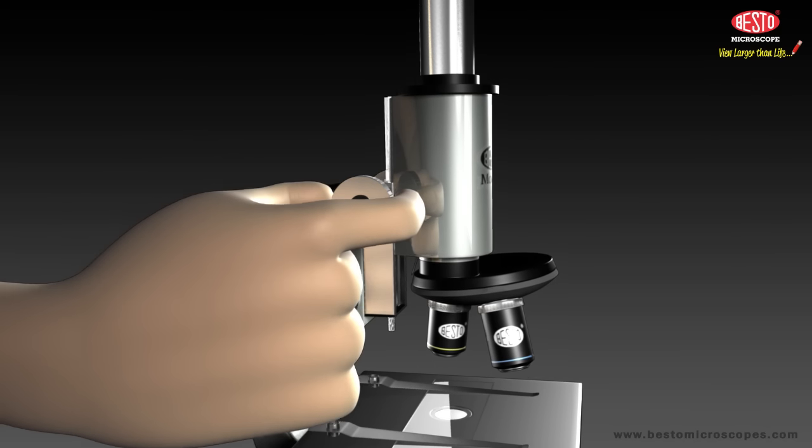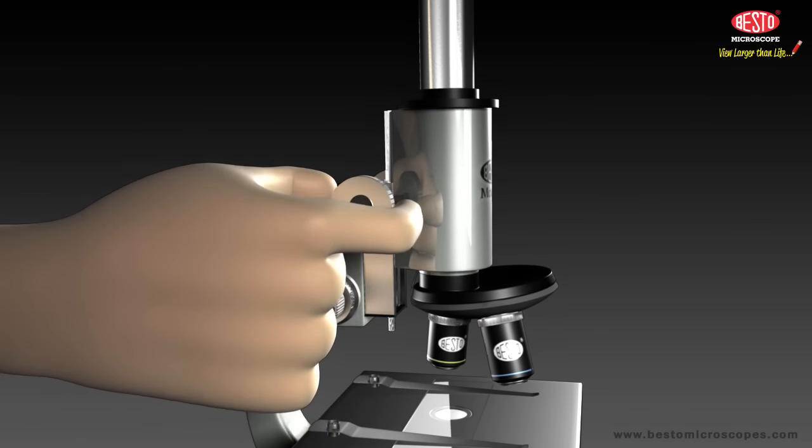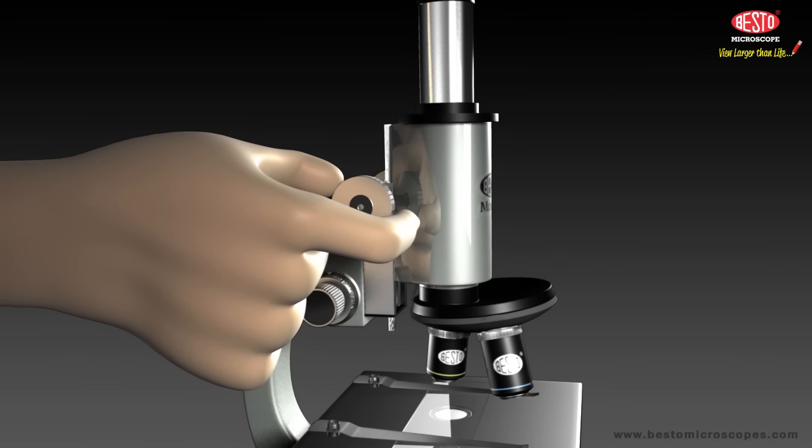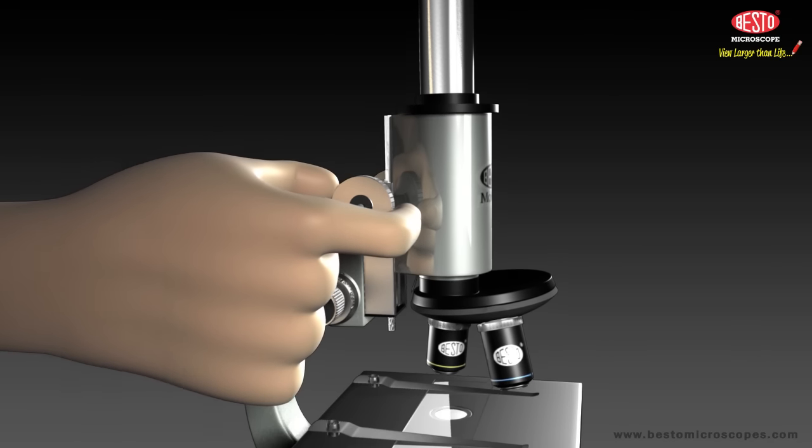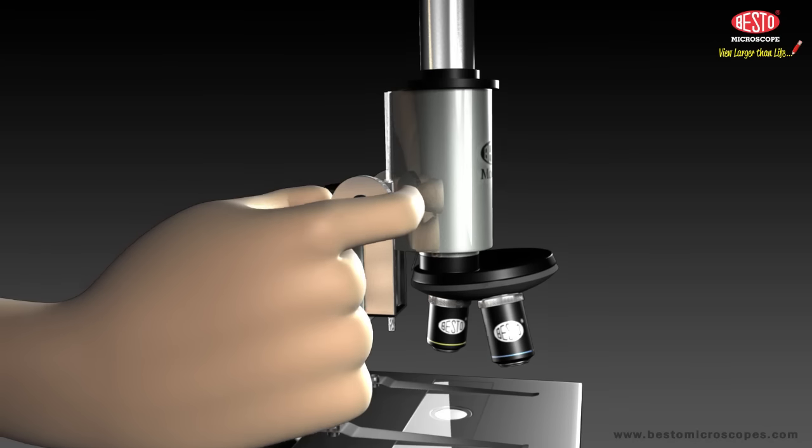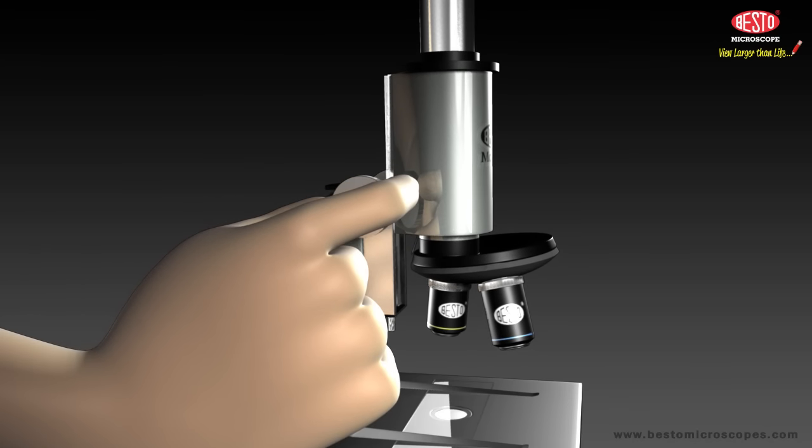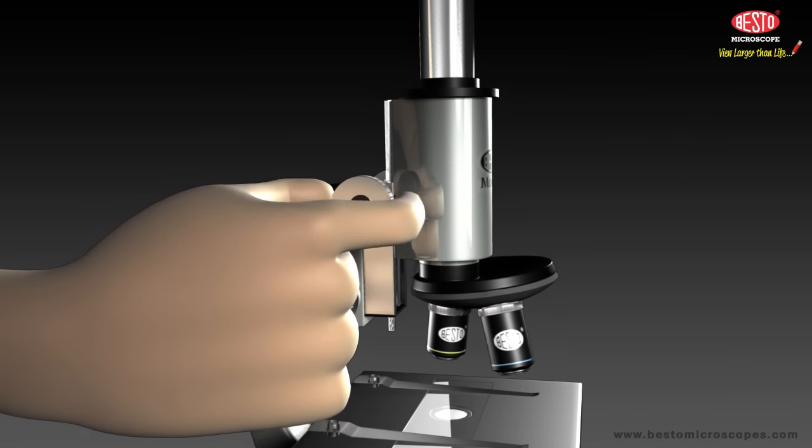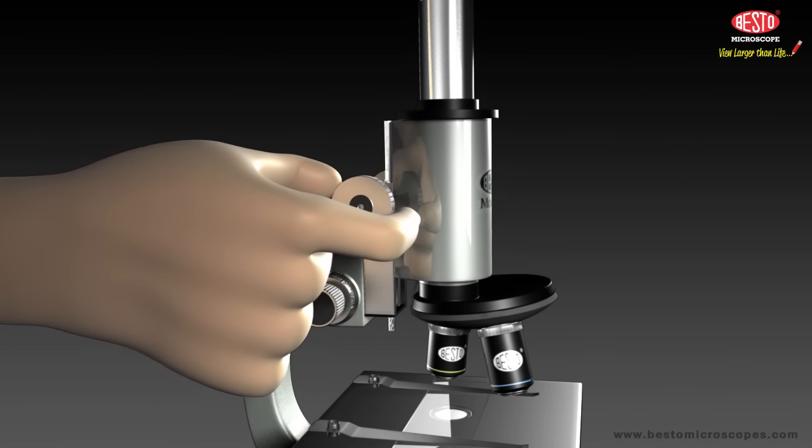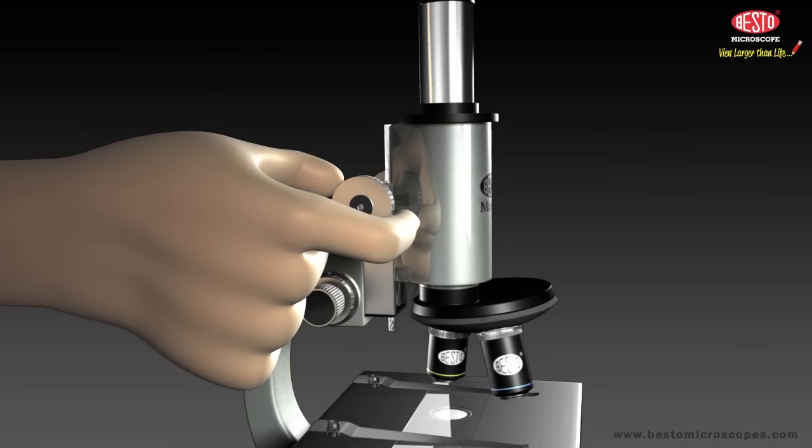Look through the eyepiece and use the coarse adjustment knob to focus upwards or move away from the sample or slide. This should bring the slide or sample into view. If you go too far, simply begin again at Step 2.